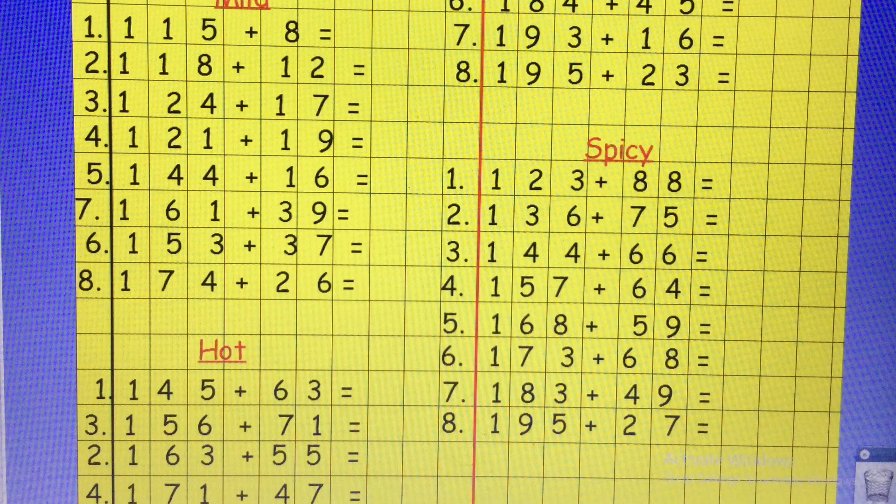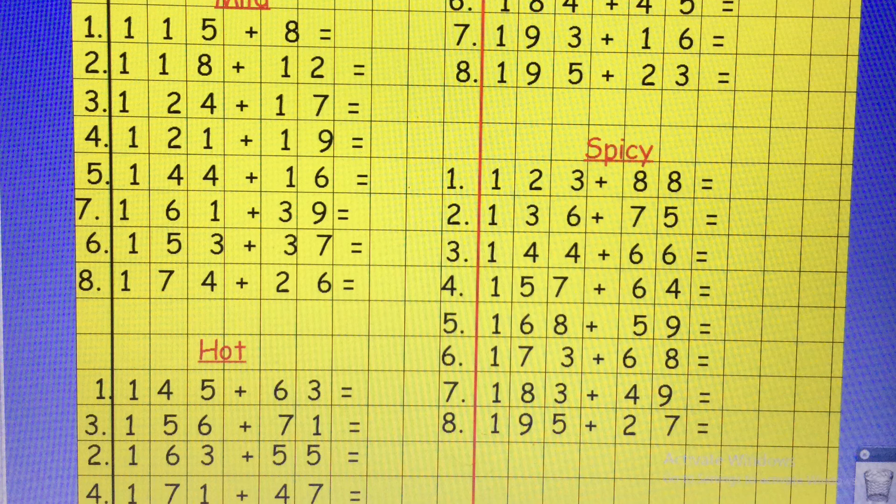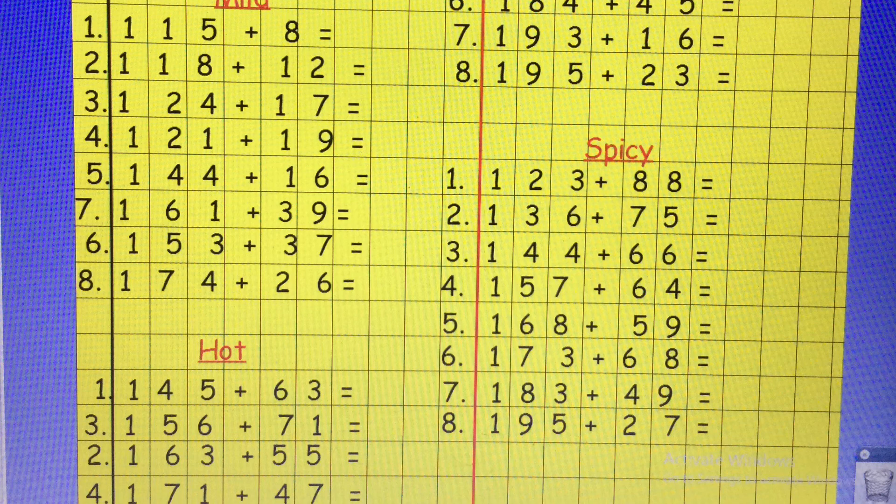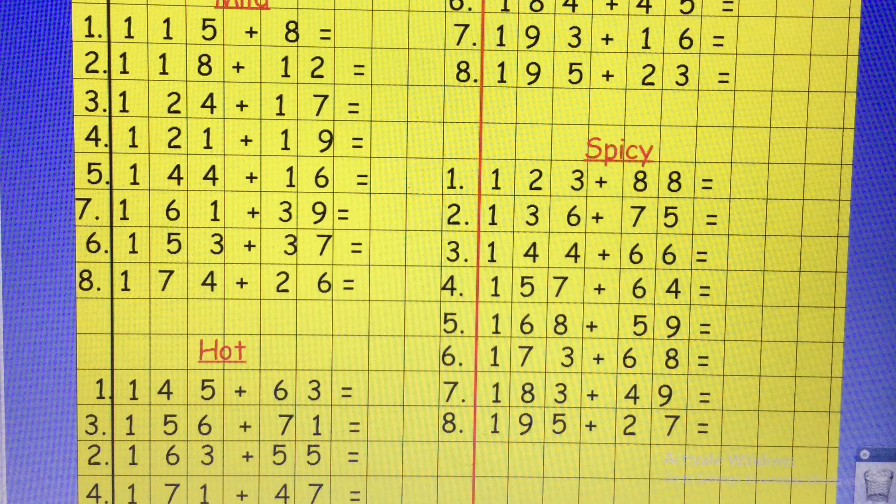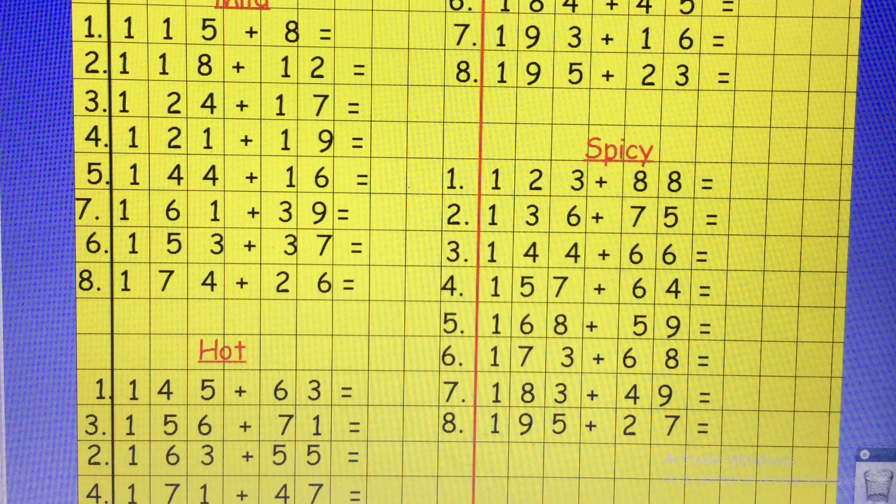Today you can choose whether you want to start on mild, on hot or on spicy. Obviously they get progressively harder the further you go through them. With mild you're adding a smaller one digit number to a three digit number and hot the numbers get larger and spicy the numbers get larger too.